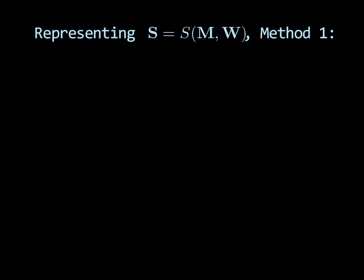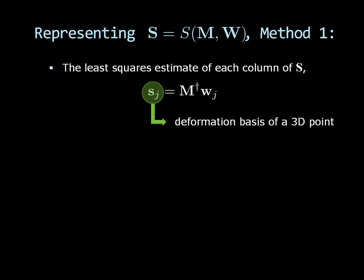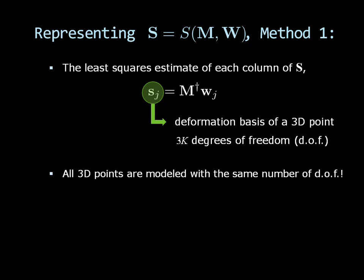Now let's consider two alternative ways of representing S as a function of M and W. The first method uses the least squares estimate of each column of S, which is defined in terms of the corresponding column of W and the pseudo inverse of M. Because factor S represents the basis shapes, each column of S gives the deformation basis of a single object point. This deformation basis has 3K degrees of freedom, where K is the number of basis shapes. Therefore, all object points are modeled with the same number of degrees of freedom.